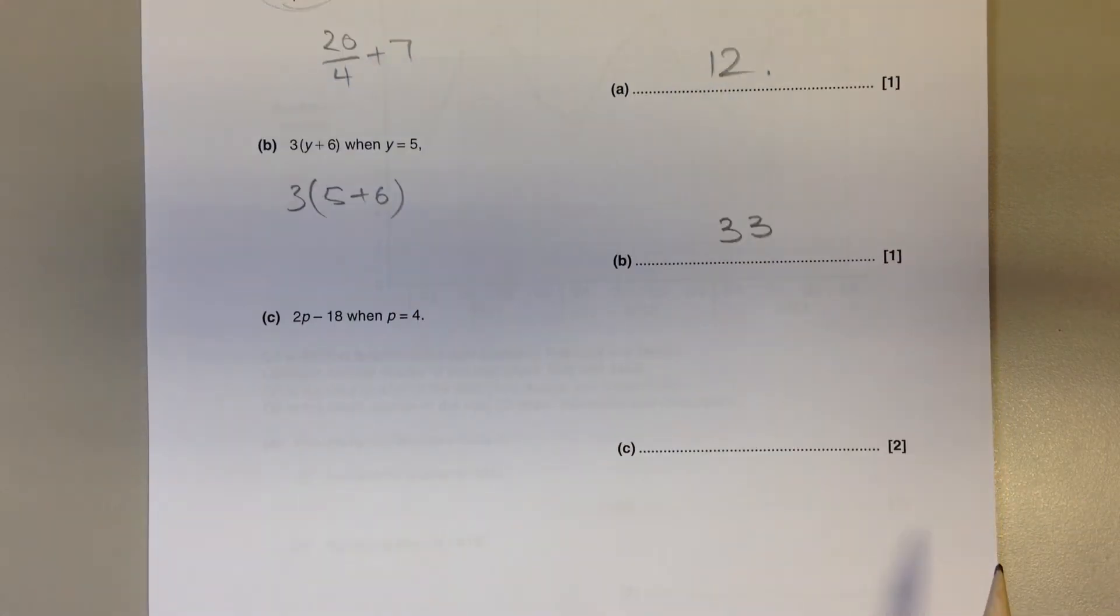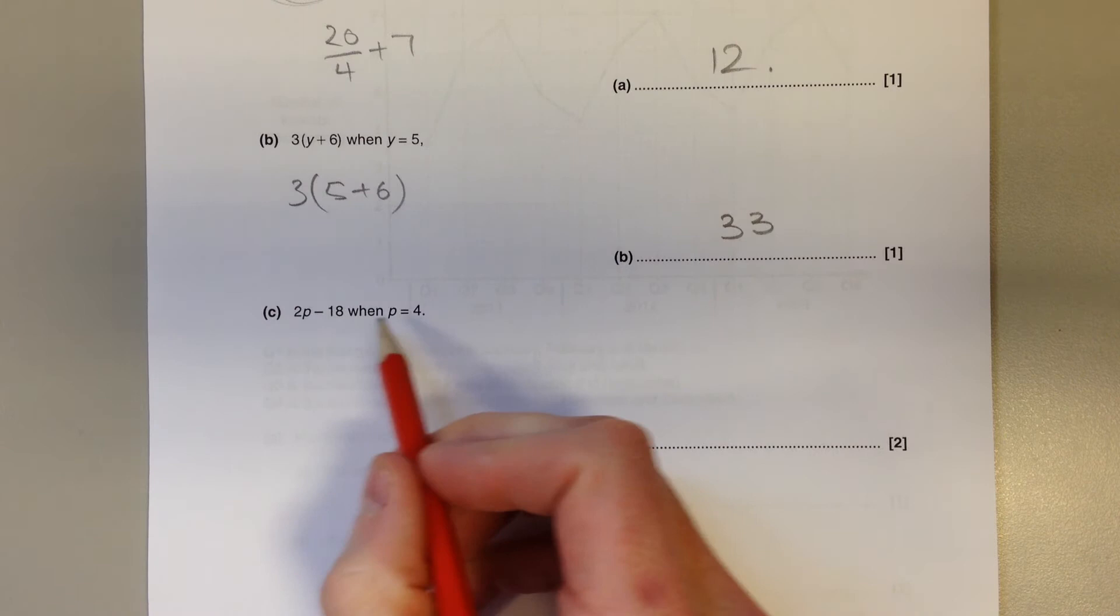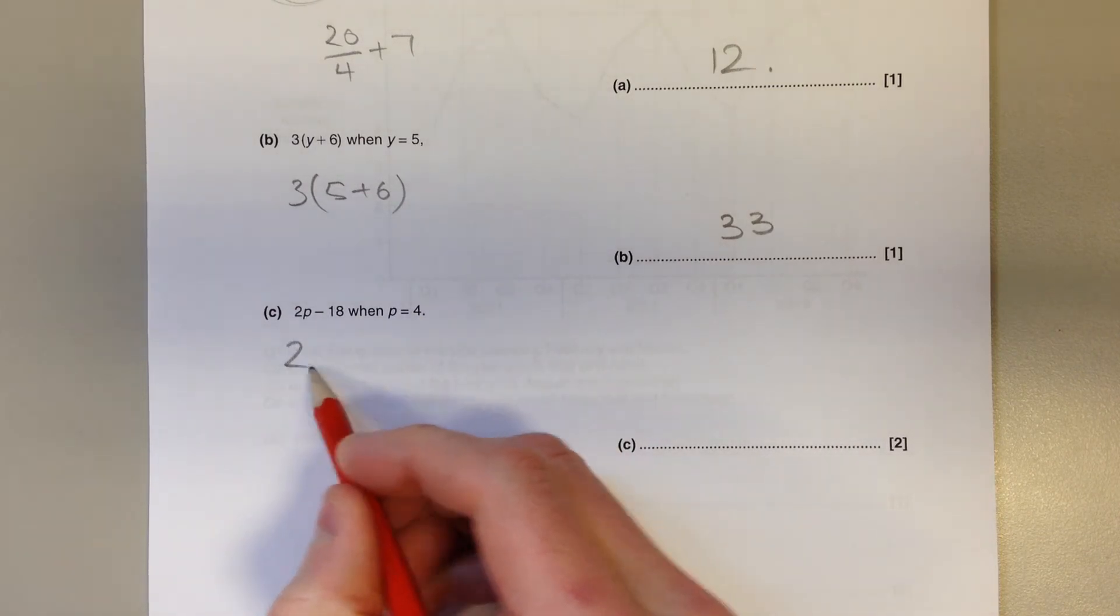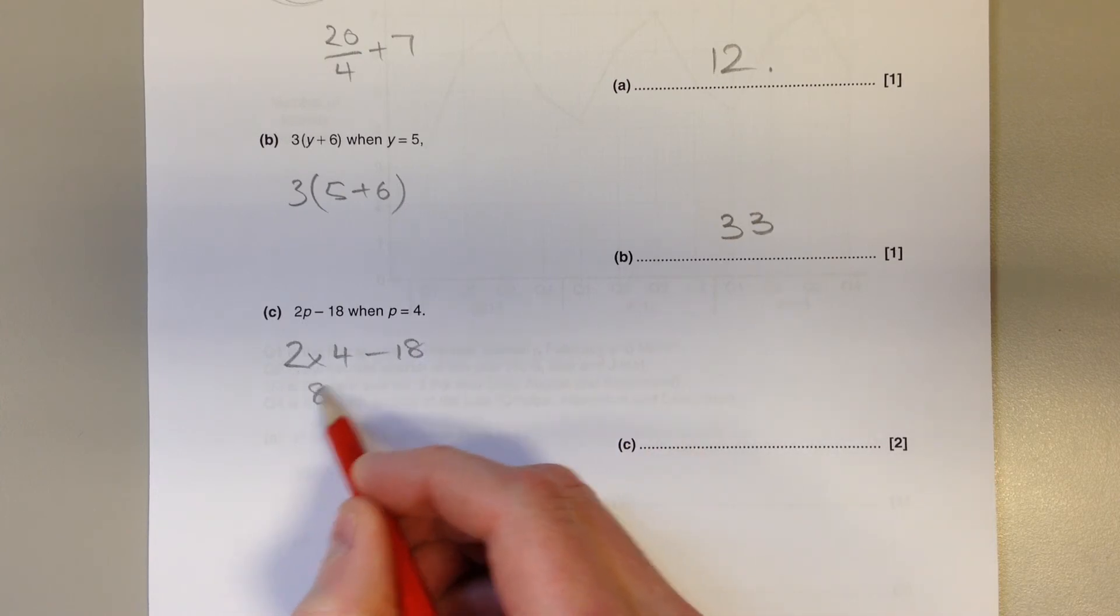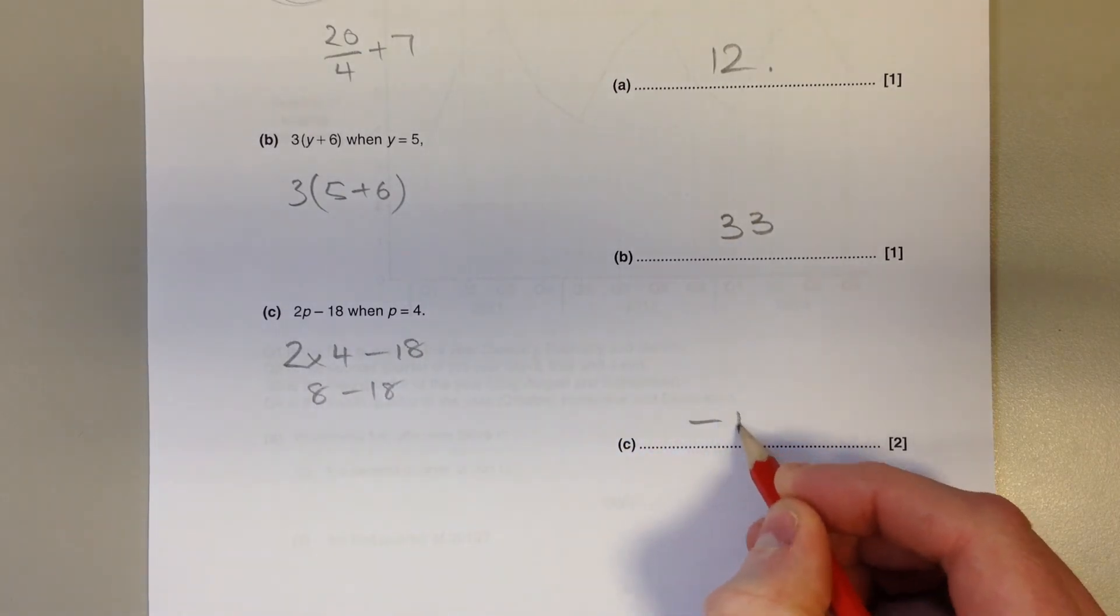Of course, all of these can be done in your calculator. Same idea here. Replace the p with 4, so we've got 2 lots of 4, and then we subtract 18. 8 take away 18 is minus 10.